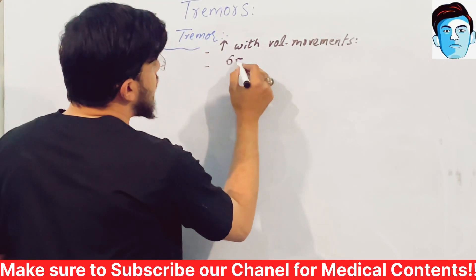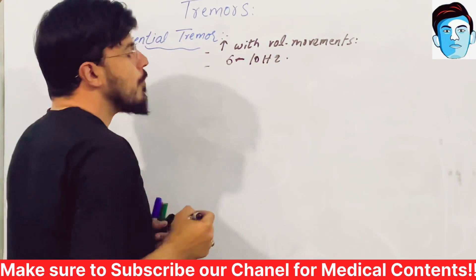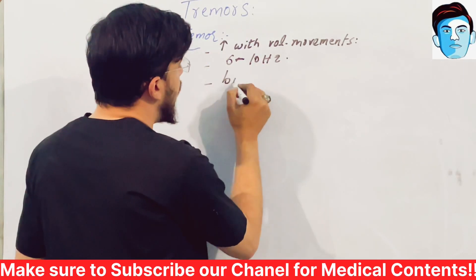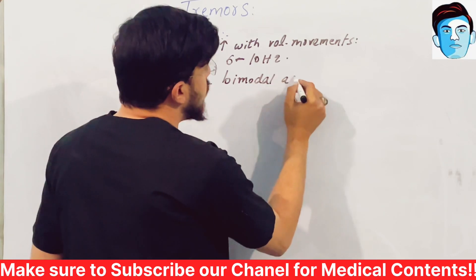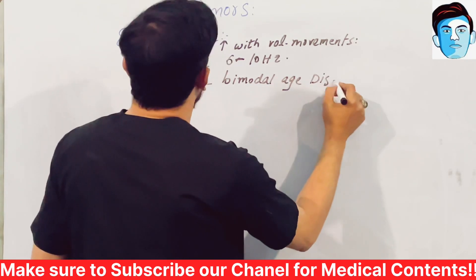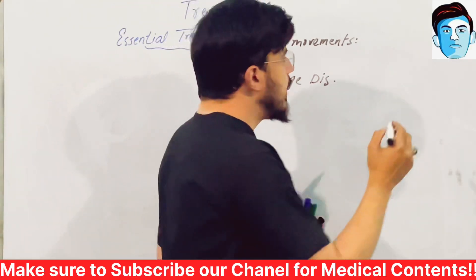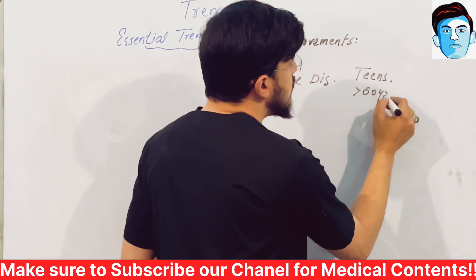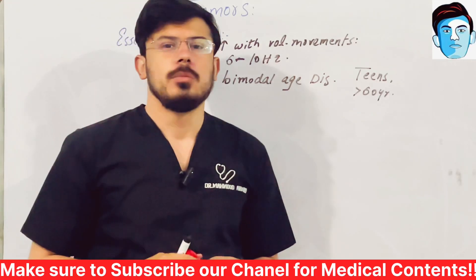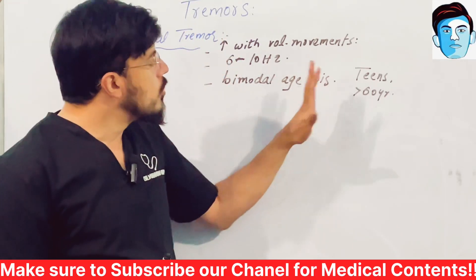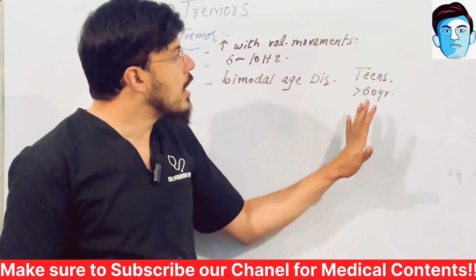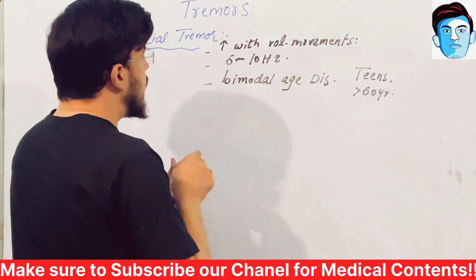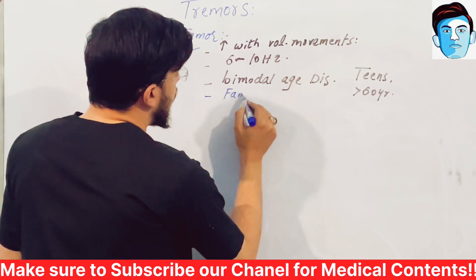The frequency of essential tremors is from 6 to 10 hertz. It is seen in a bimodal age distribution — it is most common in teens and in patients more than 60 years of age. Family history is very important in such patients; the family history will be positive.